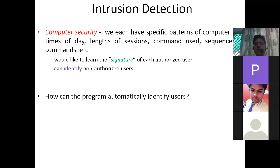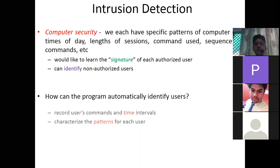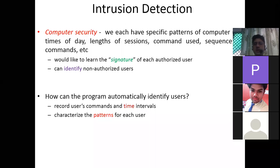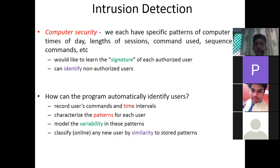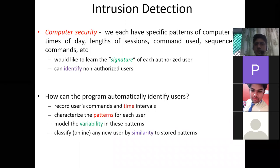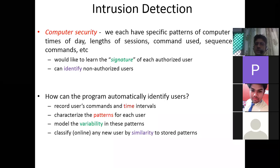How can a program automatically identify users? It records users' commands and time intervals, finds the patterns for each user, models the variability in these patterns, and classifies any new online user by similarity to stored patterns. This is how intrusion detection is done using computer security — each user has a specific pattern of computer use: time of day, length of session, and sequence of commands.